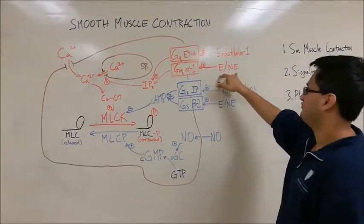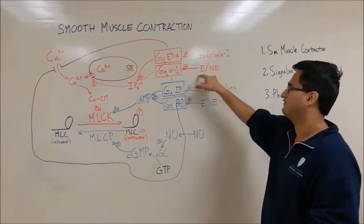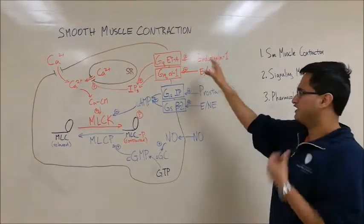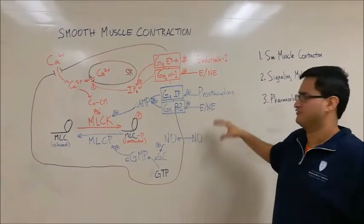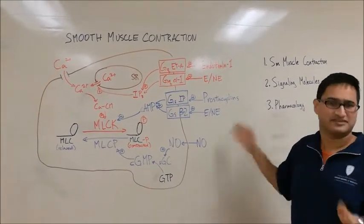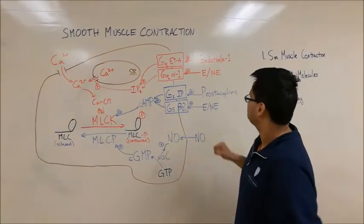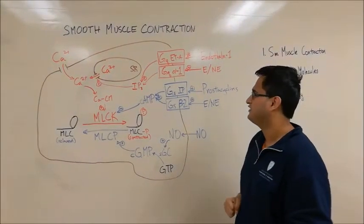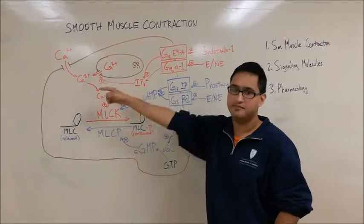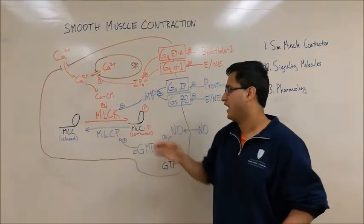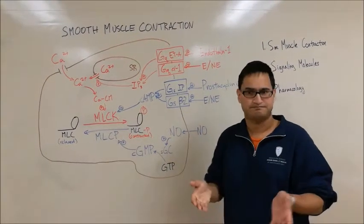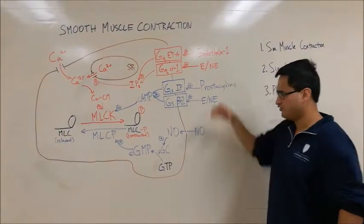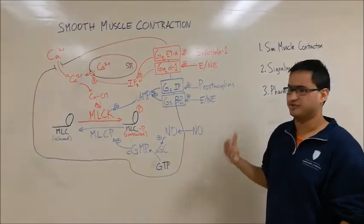Now let's talk about epinephrine and norepinephrine. These two molecules bind to different receptors, but when binding to the alpha-1 receptor — a Gq GPCR — they also promote smooth muscle contraction. By the way, all the reds are vasoconstrictors and all the blues are vasodilators. Through the same mechanism via PLC, IP3 goes to the endoplasmic reticulum, releases calcium, which binds calmodulin, activates MLCK, and produces phosphorylated myosin and muscle contraction. So epinephrine and norepinephrine share the same downstream mechanism but start with distinct receptors. Those are the two vasoconstrictors.